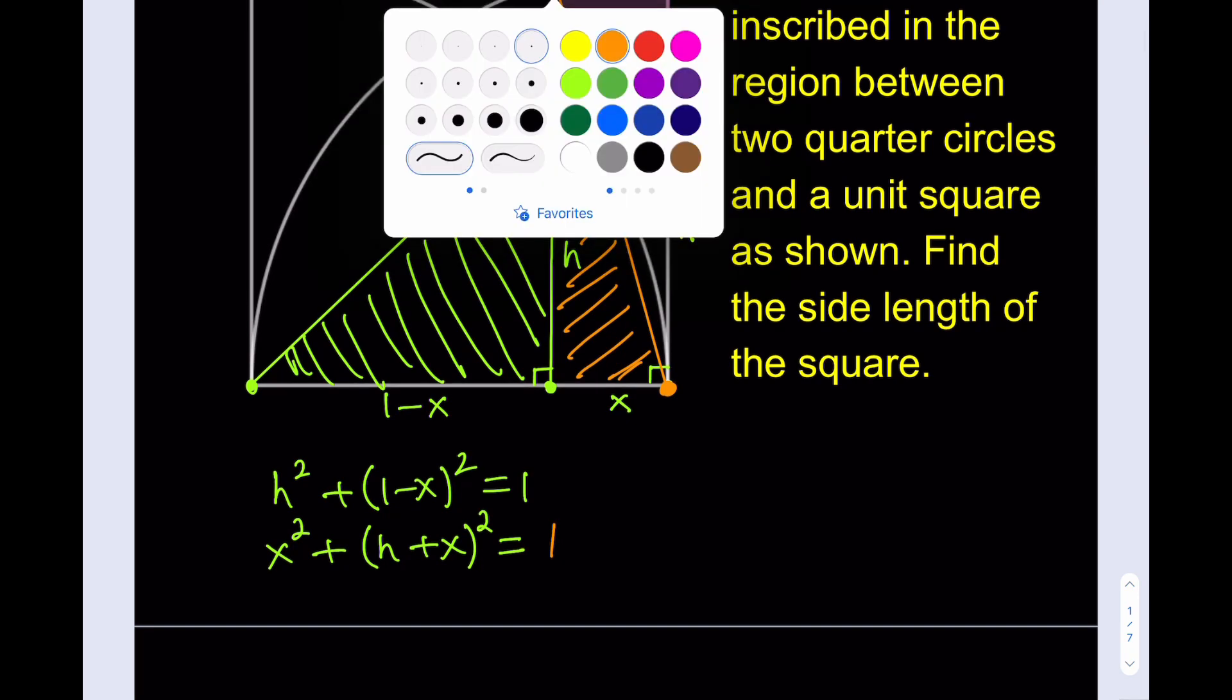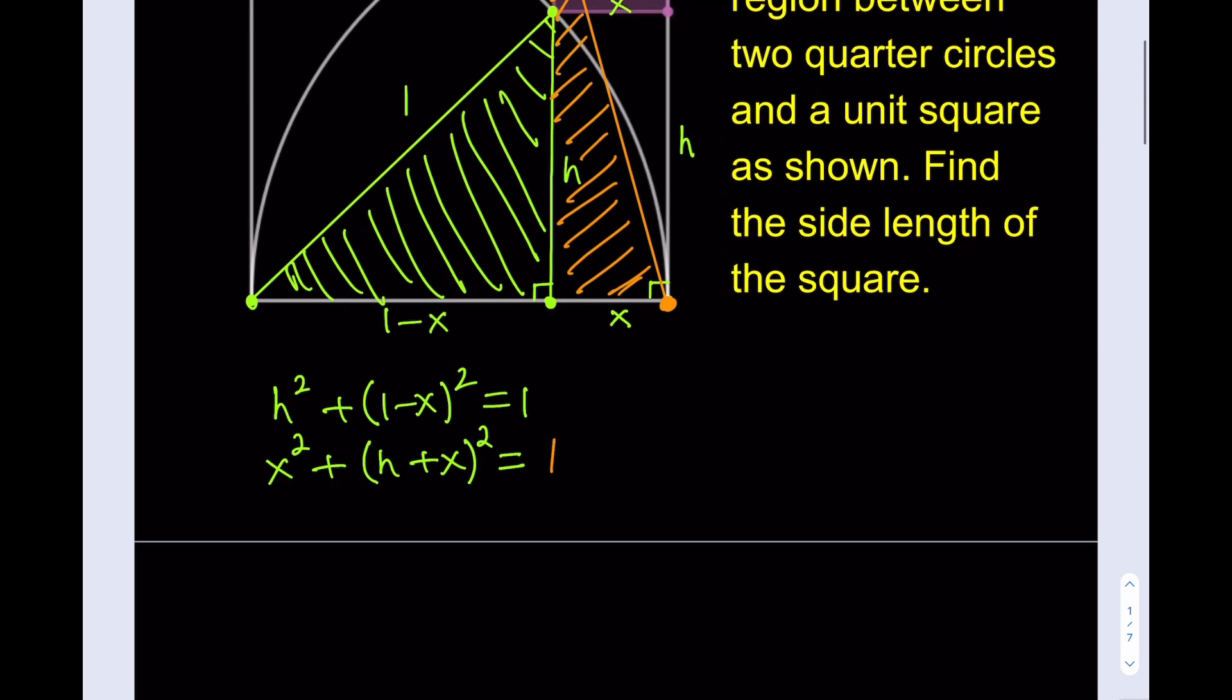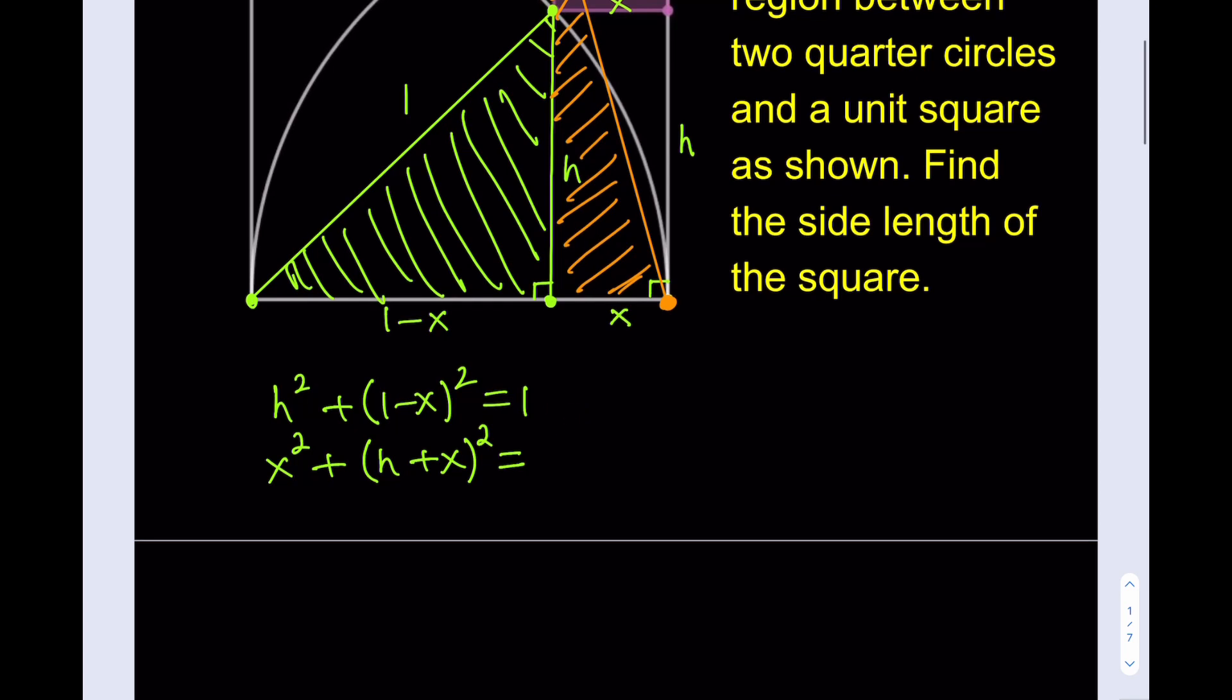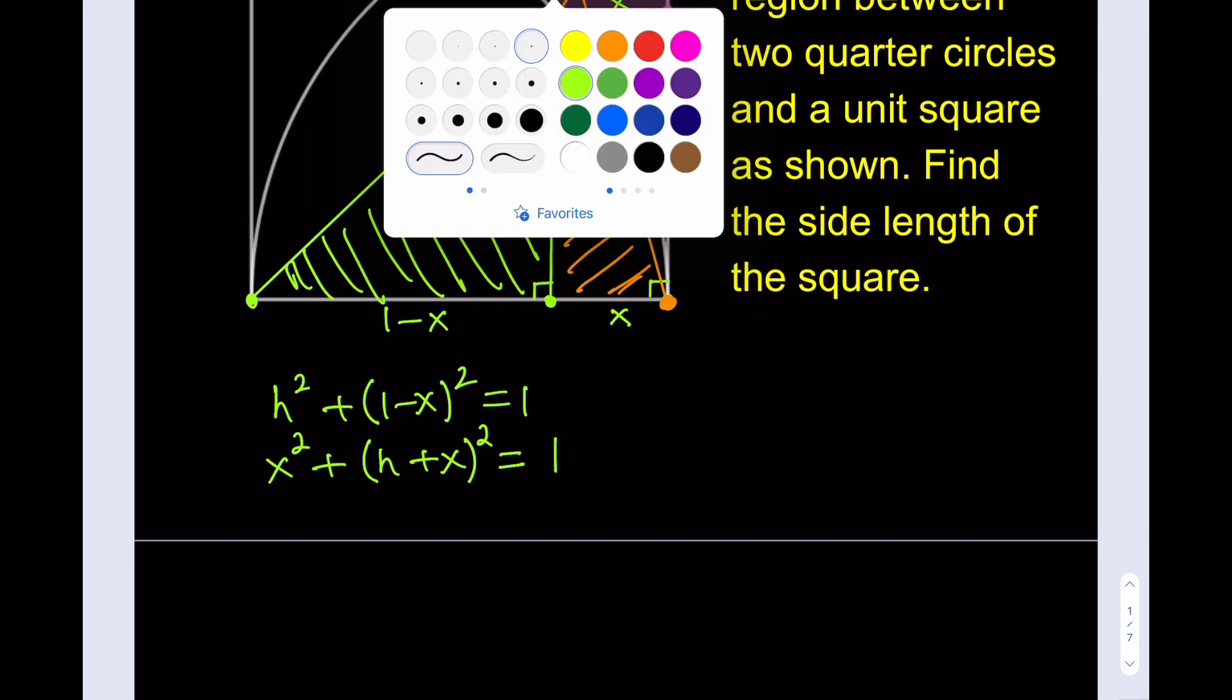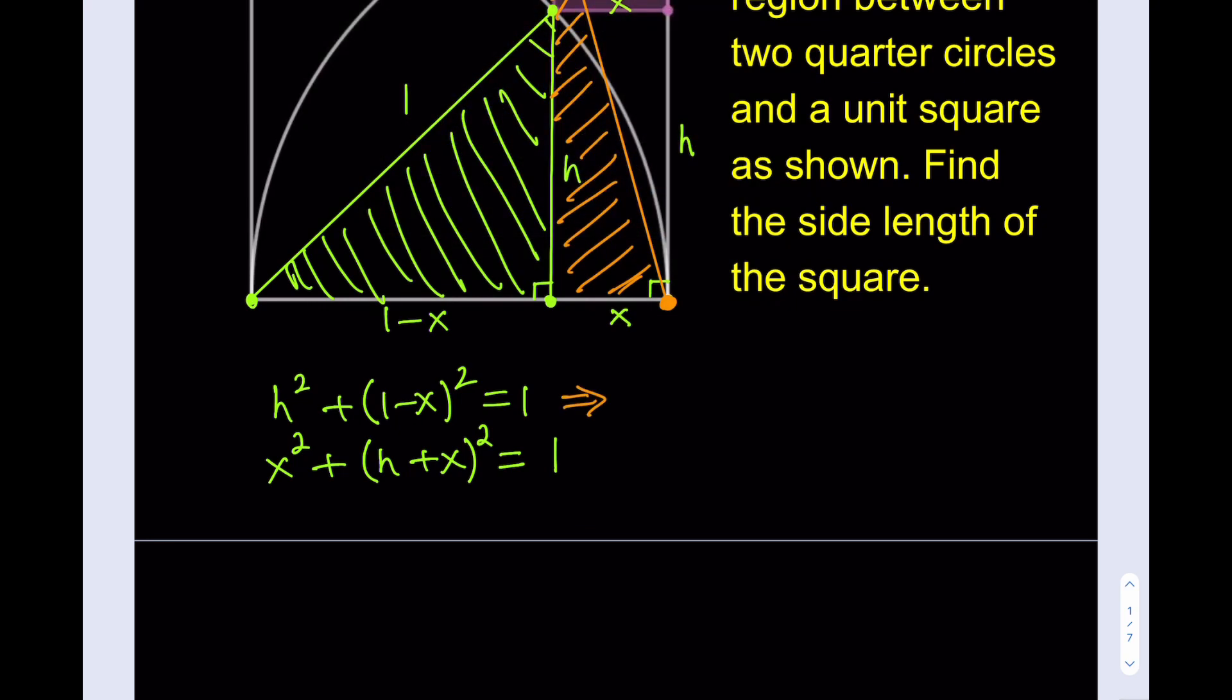So, what am I getting? x squared plus x plus h squared is equal to 1. It was kind of harder to see in the other one. But they're the same. So, what am I going to do now? Well, I'm going to solve this system. But let's go ahead and do this first because from the first equation, I'm kind of getting something nice.